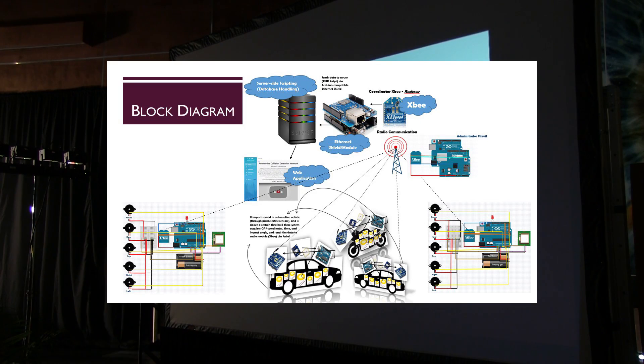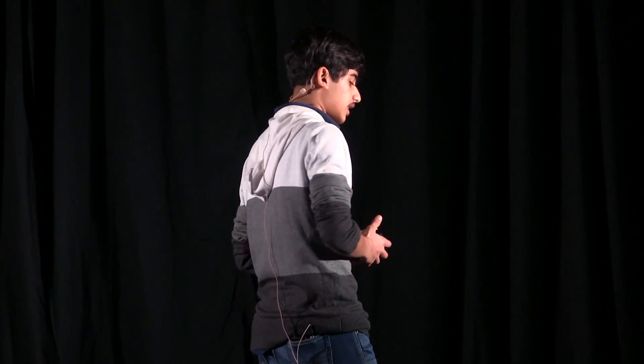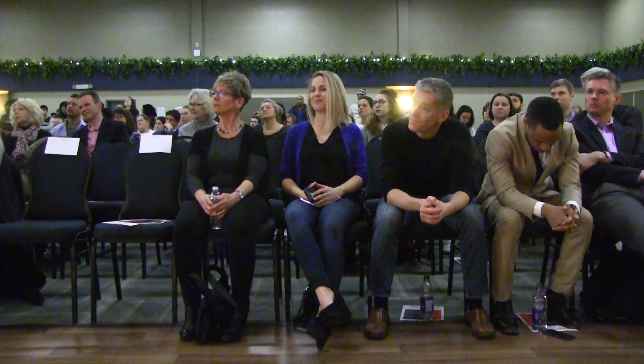This is basically the block diagram of the application. Each car body will have a layer of piezoelectric sensors or piezoelectric material that detects vibrations or impacts, and forwards that to a microcontroller — in this case, an Arduino. The microcontroller checks if it's above a certain threshold; if yes, it gathers GPS coordinates and forwards that information to a radio module, which relays it to a coordinator XBee at the administrator's end. That coordinator XBee then forwards the information to an Ethernet module, which saves it to a server via a PHP back-end.